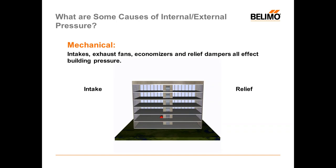Mechanical systems — exhaust fans in restrooms, economizers, relief dampers — all of those affect building pressure. Mechanical systems are needed in order to maintain or regulate your building pressure. Excess intakes cause positive pressure, and excess relief can cause negative pressure effects.